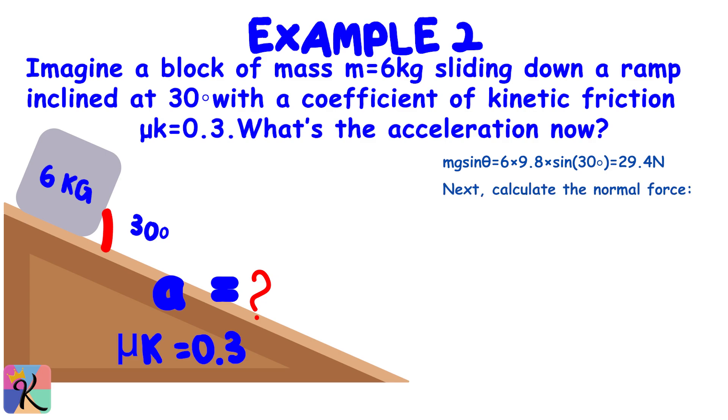Next, calculate the normal force: Fn = Mg cos theta = 6 × 9.8 × cos(30°) = 50.9 newtons. The frictional force Ff = μk·Fn = 0.3 × 50.9 = 15.27 newtons.